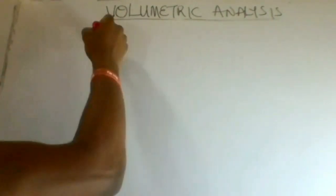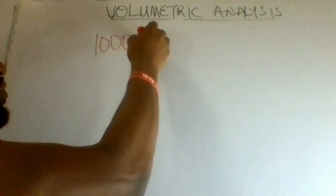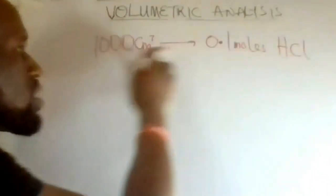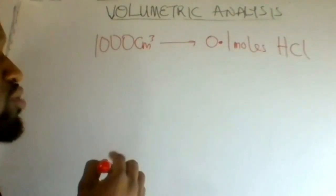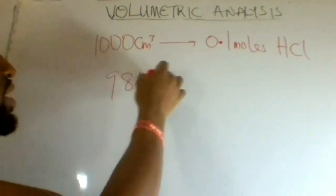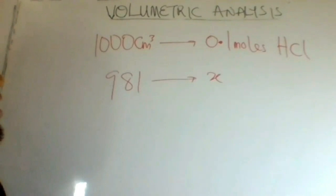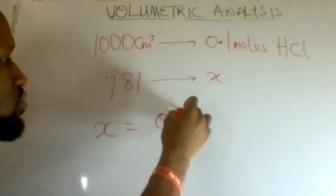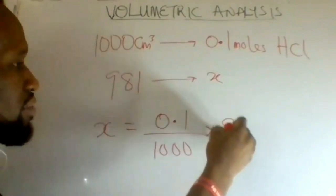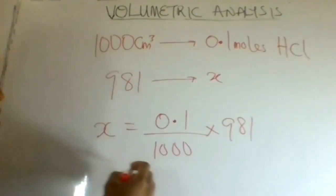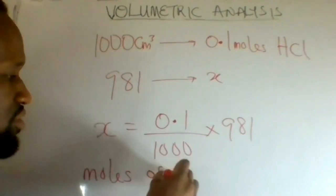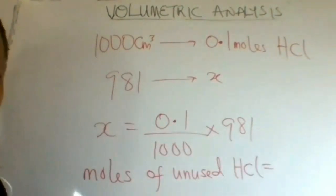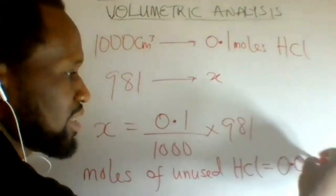The question gave us 1000 cm³ of HCl at a concentration of 0.1 moles. Therefore, if 1000 cm³ corresponds to 0.1 moles, then 981 cm³ will correspond to X. X equals 0.1 divided by 1000, multiplied by 981. The moles of unused acid equals 0.098 moles.